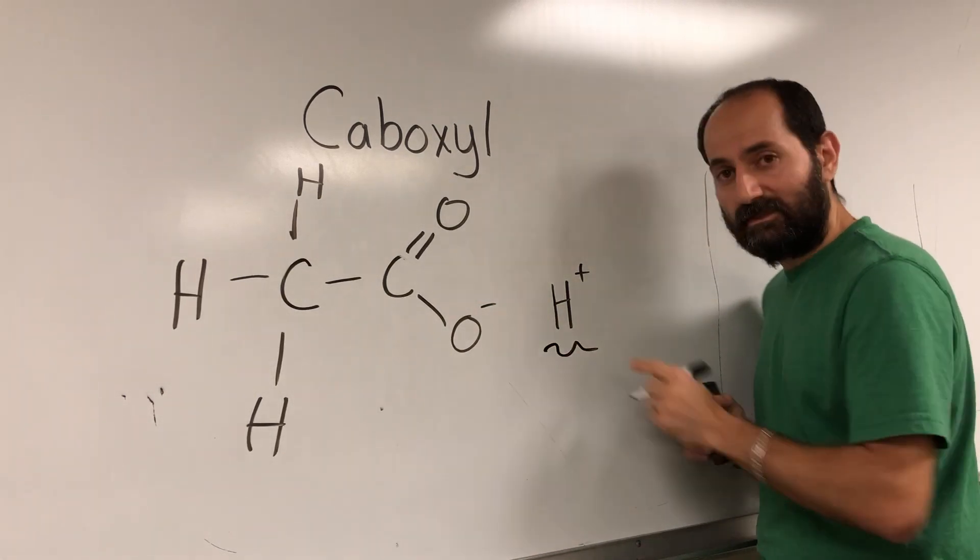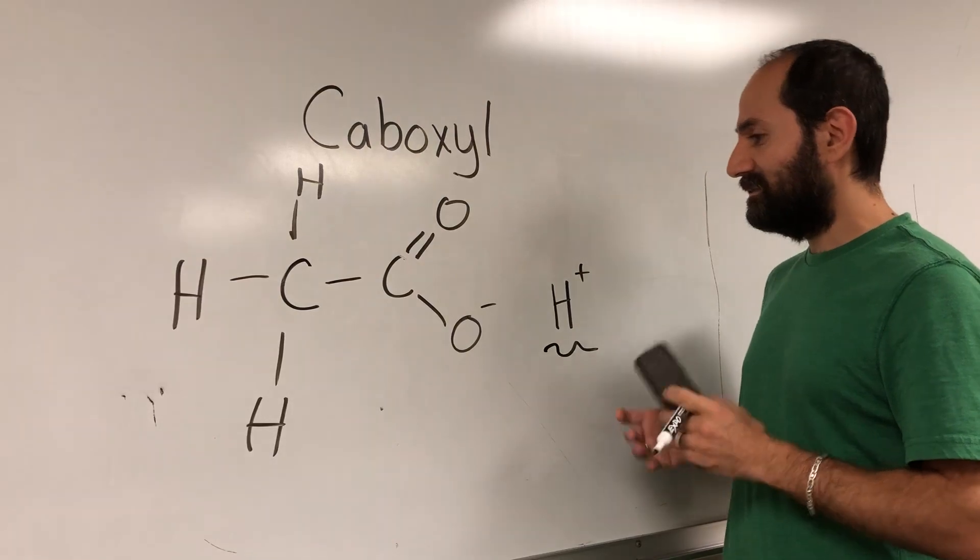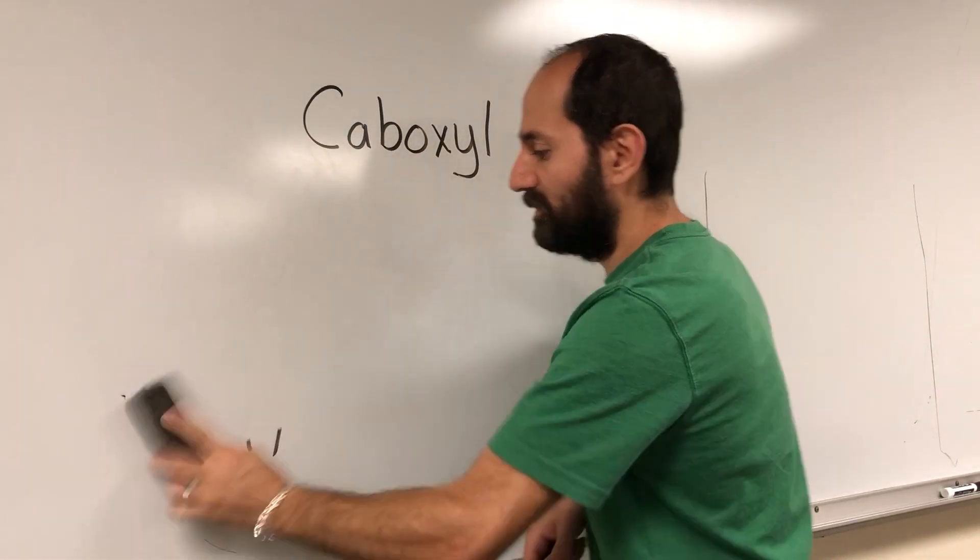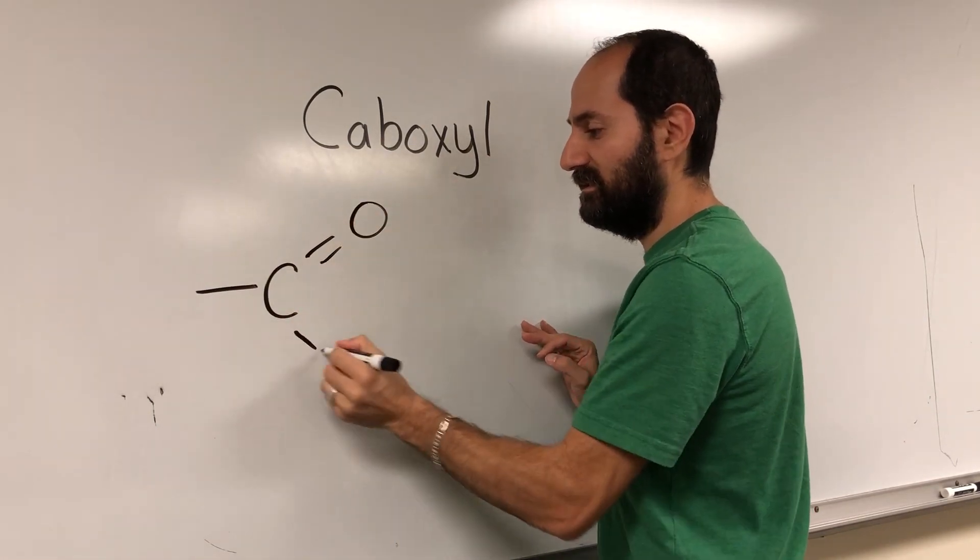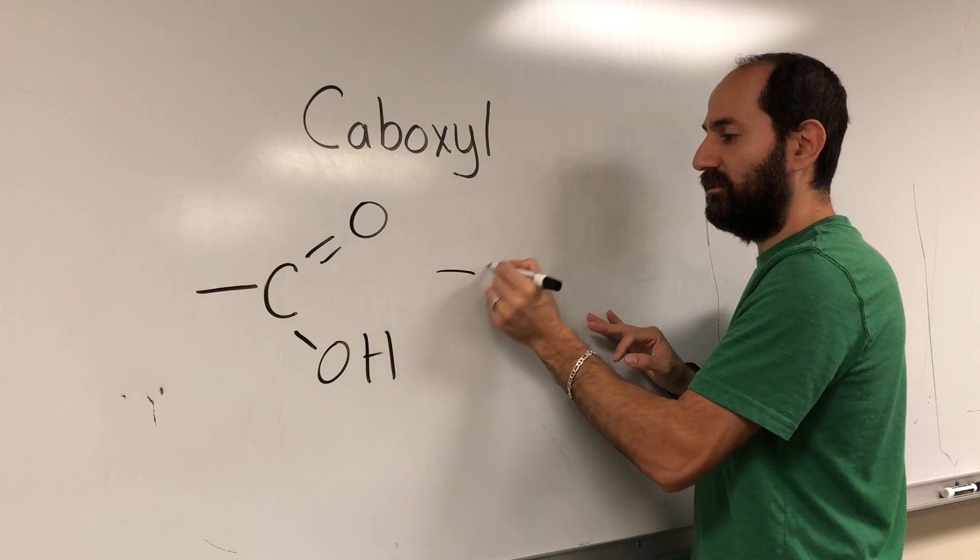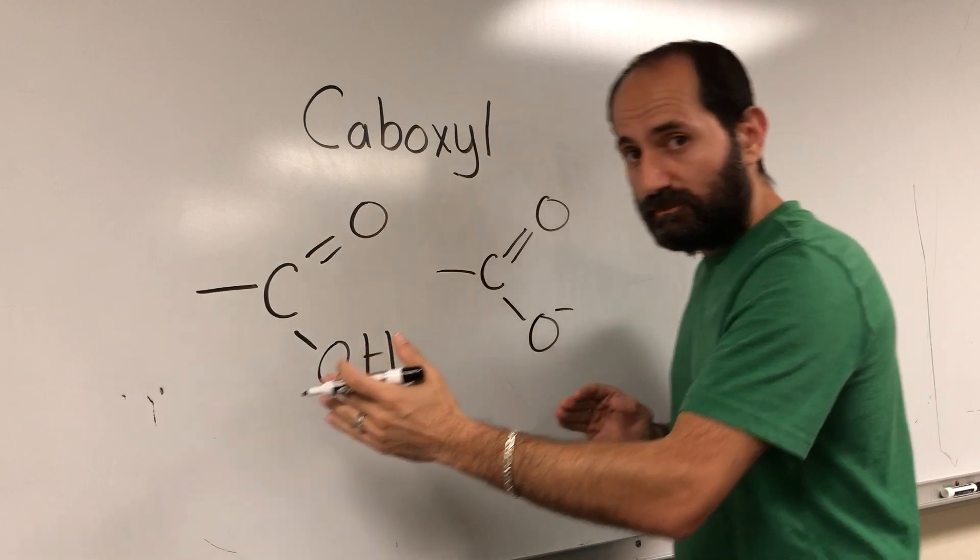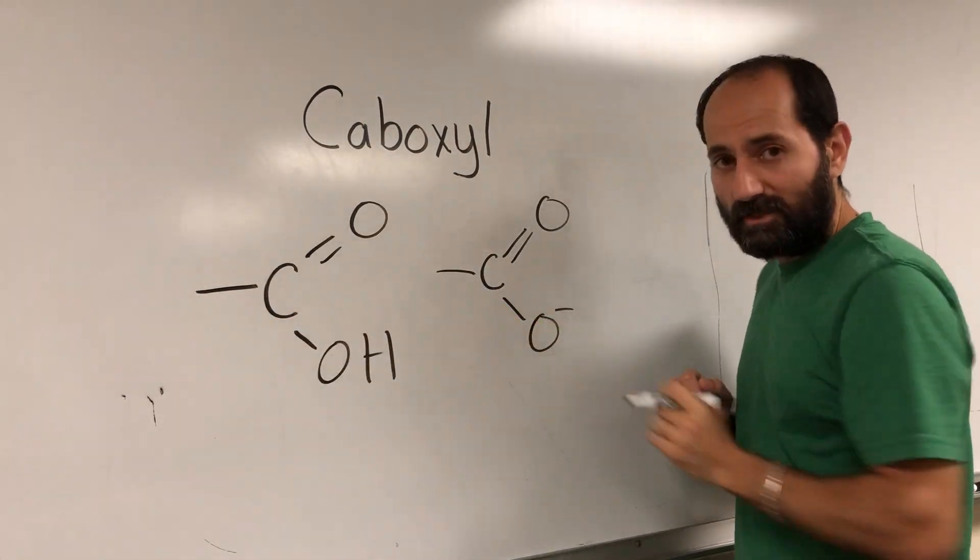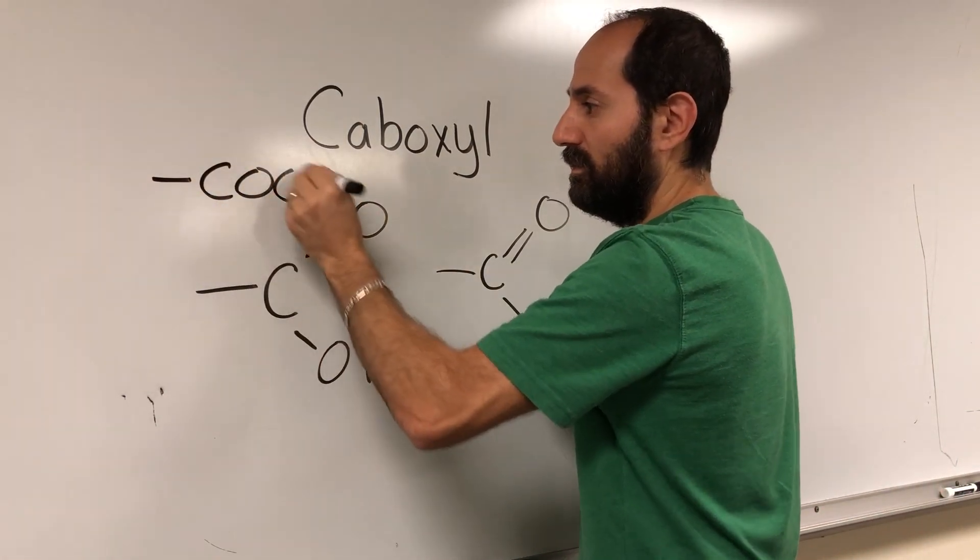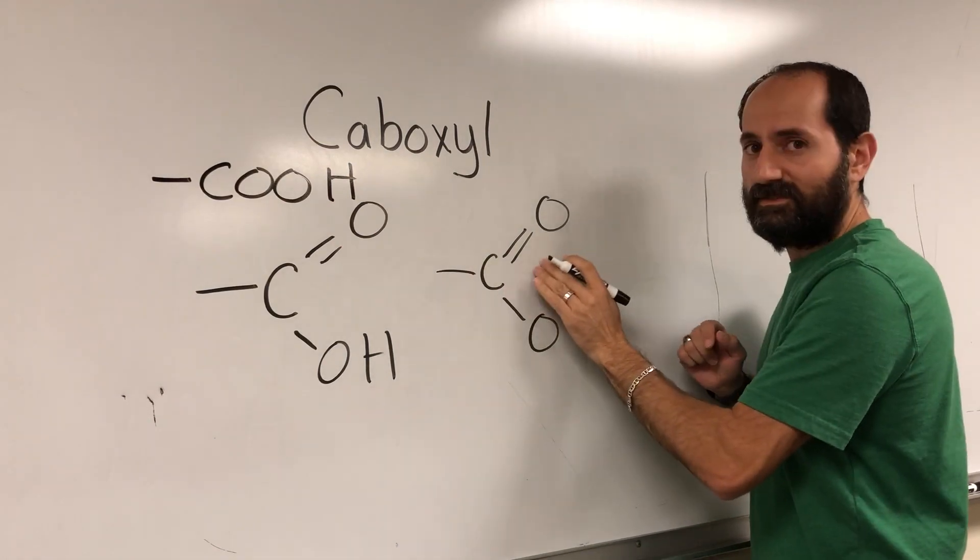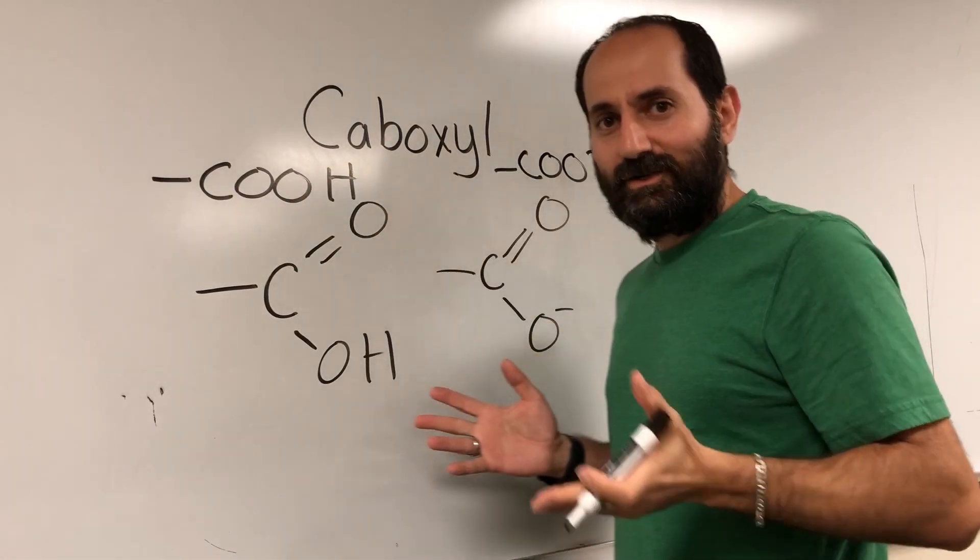That proton's now floating around in solution, making my solution more acidic. Just to wrap up, carboxyl groups are acidic functional groups. You should realize there is a non-ionized form which looks like this, and then there's the ionized form which looks like this. This is the same as saying COOH, and this is the same as saying COO minus. So there's like four different ways of writing carboxyl group.